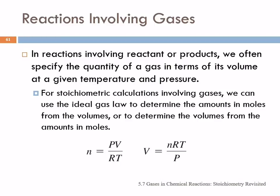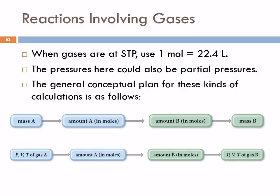We can use the ideal gas law to determine amounts in moles of gases from their volumes when we know the temperature and the pressure. So we end up using this rearrangement n = PV/RT if we're given a volume and we need to find the number of moles, or V = nRT/P. When the gases are at STP, things get simpler because we can use the molar mass of the gas, which is 22.4 liters per mole. Sometimes the pressures that are given are going to be partial pressures, and that's fine as well.